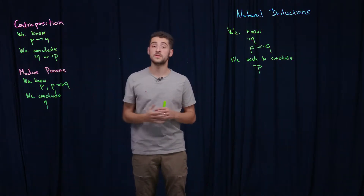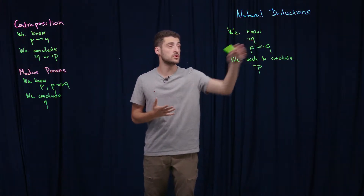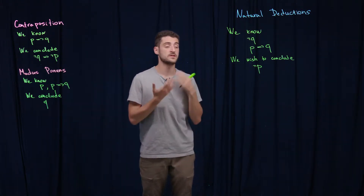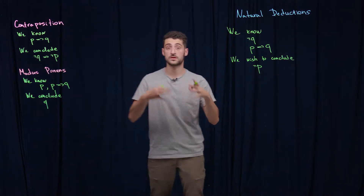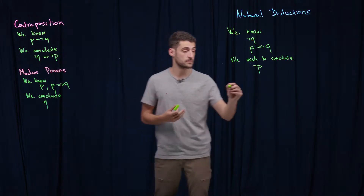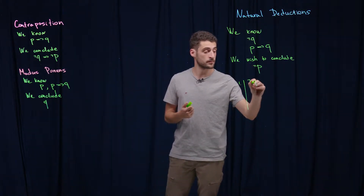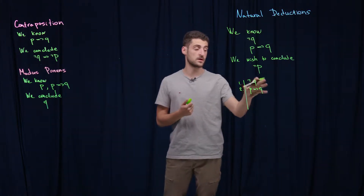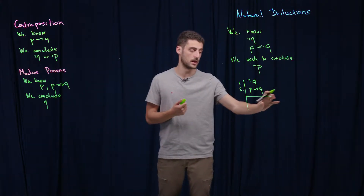Let's use these two arguments to prove something more complicated. Imagine that we know not q, and we also know that p implies q, and we wish to conclude that not p is true. So let's write it using the Fitch notation, which we are going to use in the future. We know not q and p implies q — these are our assumptions, separated from the actual proof by the line.